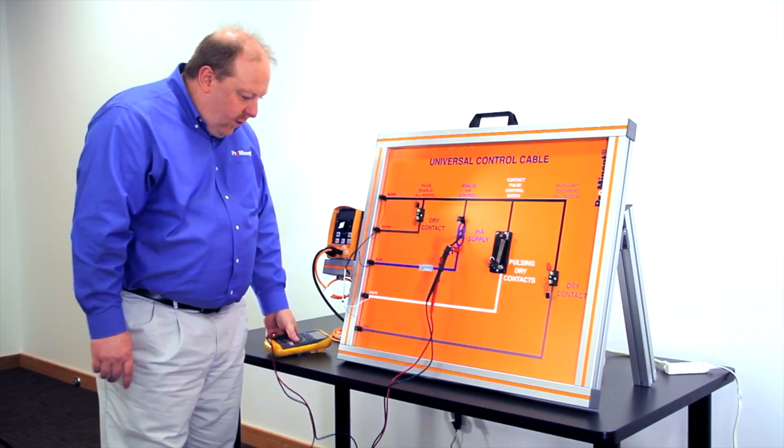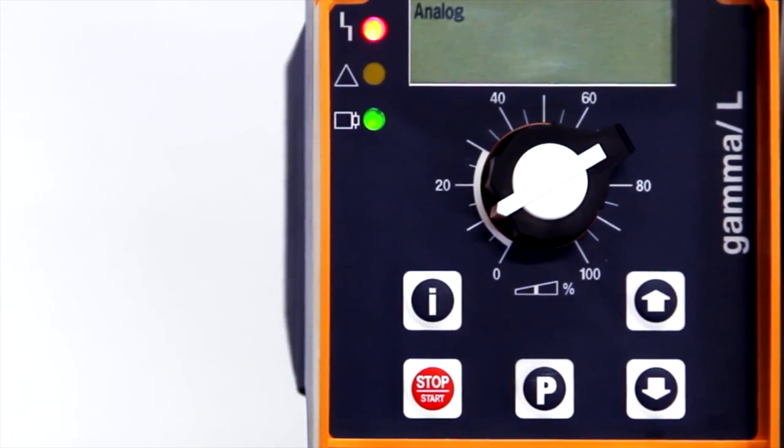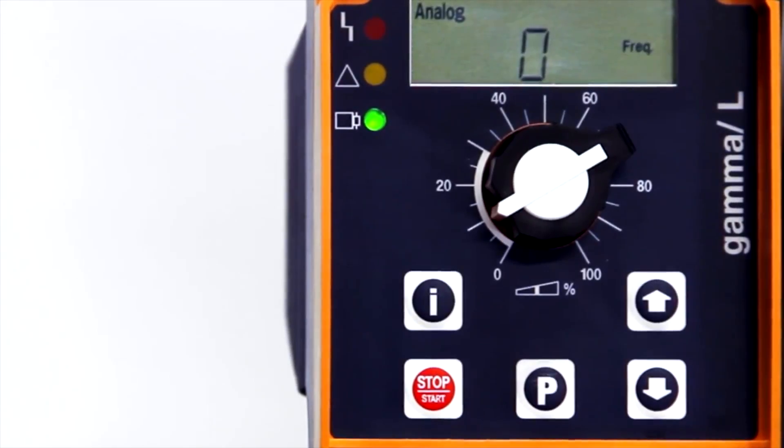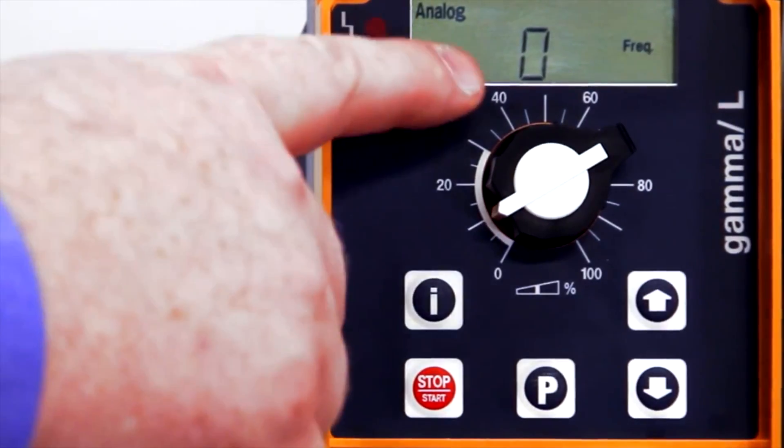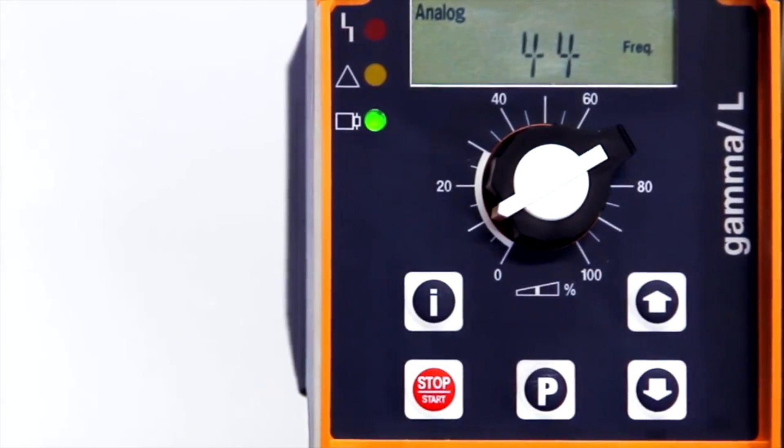Right now we're sending 4 milliamps. You can see 4 milliamps. Once the pump is at 4 milliamps, you'll see that it's going to stroke zero times. We increase that to a quarter of the range, say 8 milliamps. The pump responds to that accordingly.